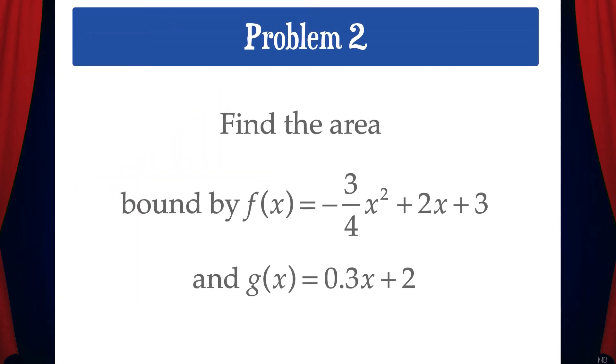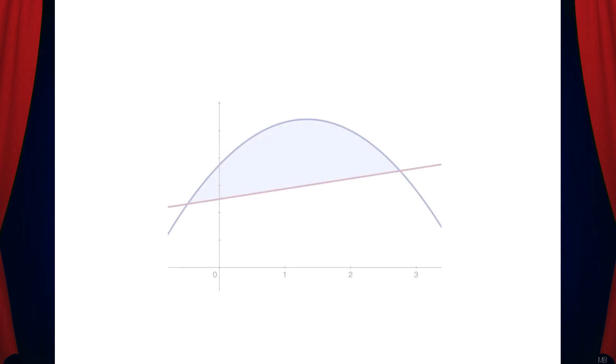Let's do another example. Find the area bound by f(x) = -3/4 x² + 2x + 3 and g(x) = 0.3x + 2. So let's go ahead and graph the functions, and we'll use a calculator to find the points of intersection. Since the parabola is always above the line within the region, we'll use vertical rectangles to solve this problem.